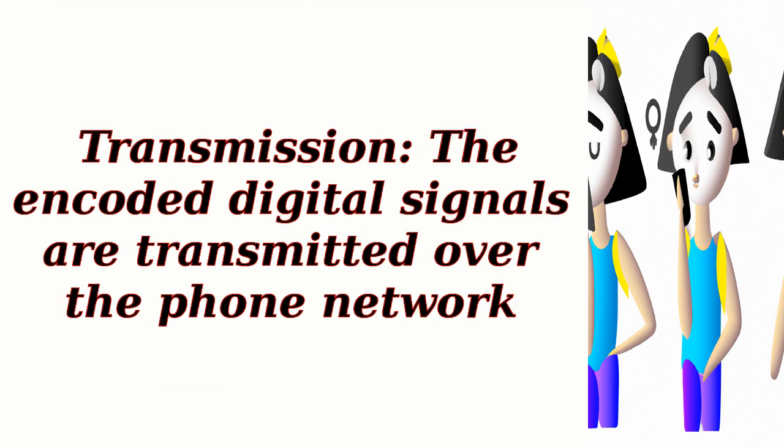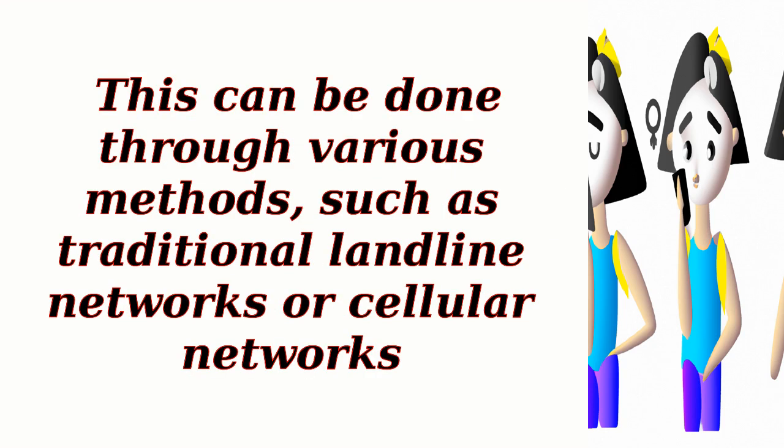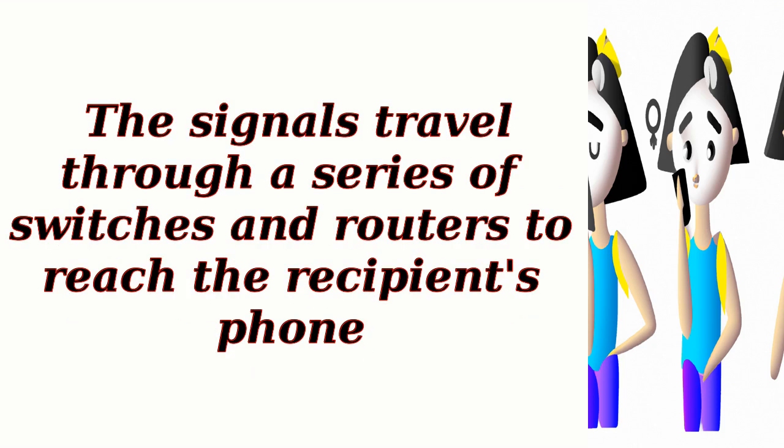Transmission: the encoded digital signals are transmitted over the phone network. This can be done through various methods, such as traditional landline networks or cellular networks. The signals travel through a series of switches and routers to reach the recipient's phone.